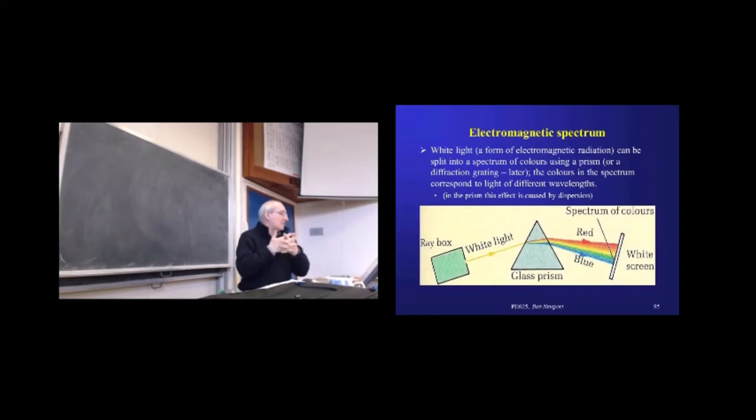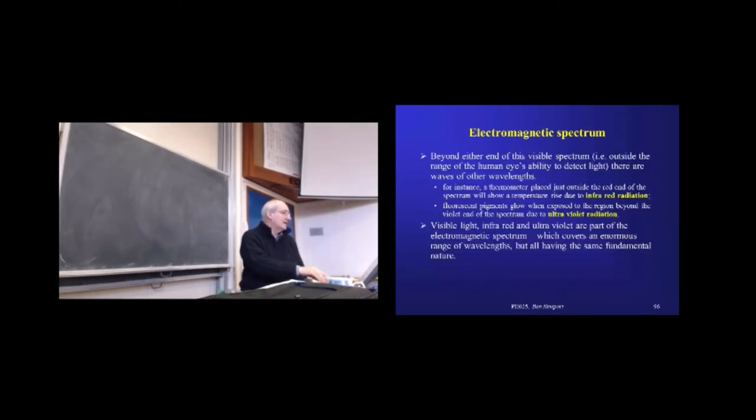Now, the stuff that we see with our eyes, white light as we would describe it, we know we can split up. So we can get a source of white light, put it through a prism, and we can get the classic spectrum of colors coming out the inside. Everybody knows that. And that's caused by dispersion. So here's our first generic wave thing that we've translated into a specific. We get dispersion with light as well.